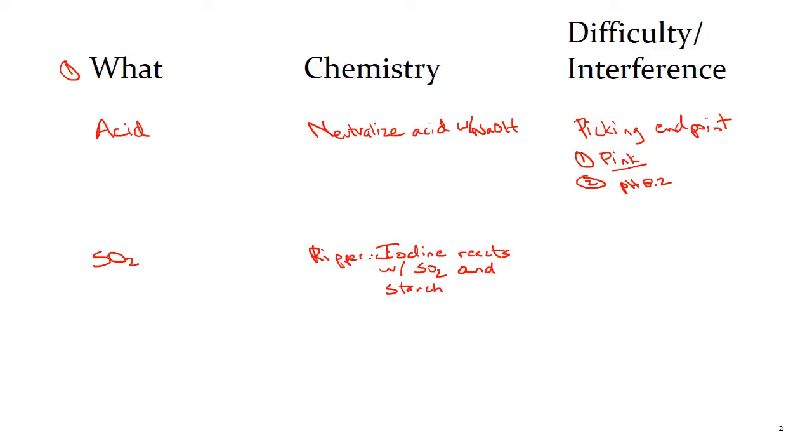And the iodine reacts with SO2 first and there's no color change. But when the SO2 runs out, the iodine reacts with starch and that turns a black color. And so the difficulty here is really about the same. It's picking the endpoint. And that's not too bad in white wines, but we know it's pretty difficult to see that black color change in red wines. So picking the endpoint, especially in red wines is the difficulty.